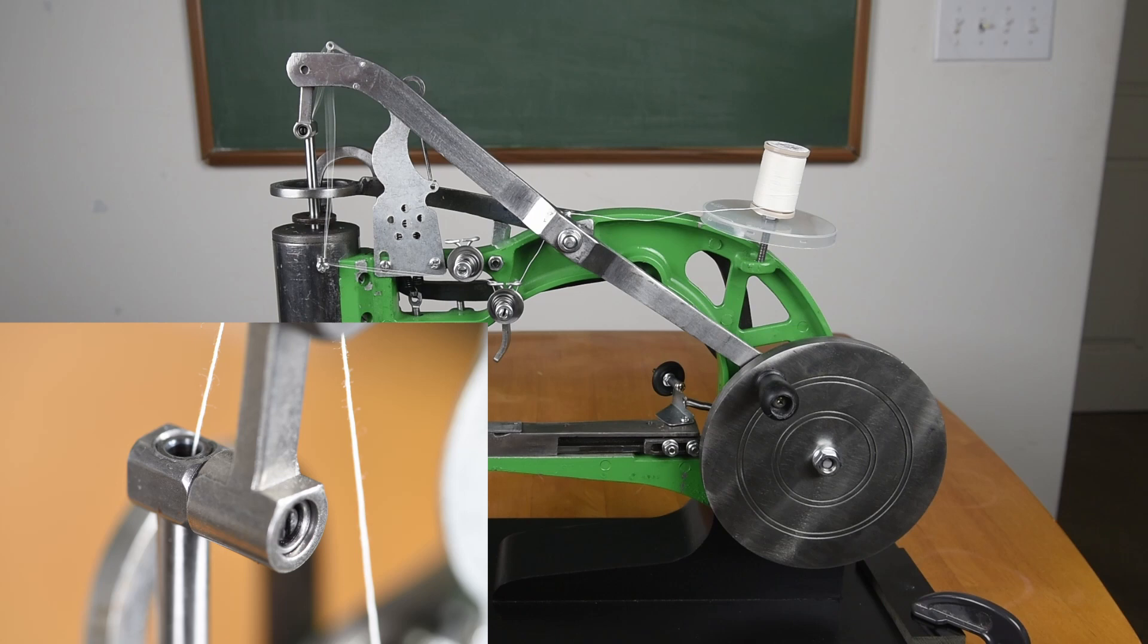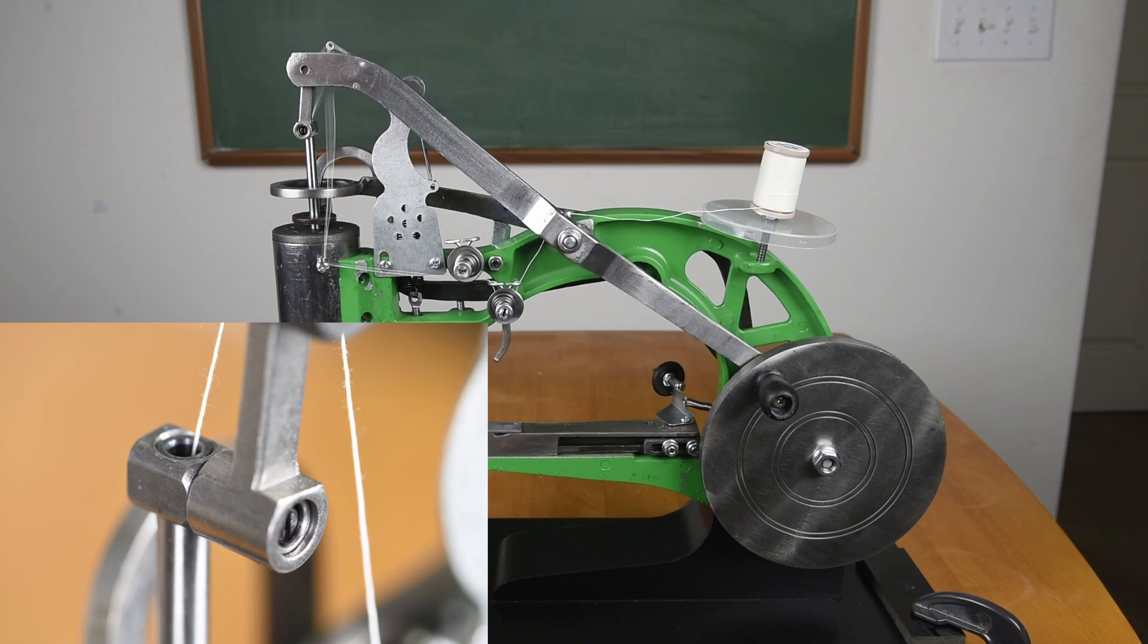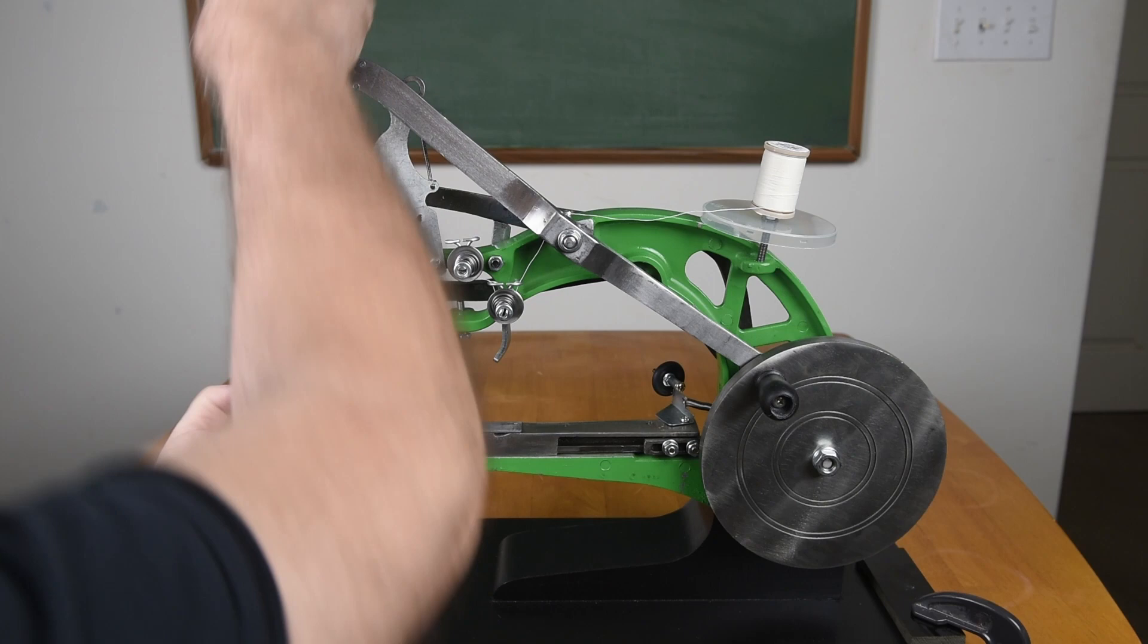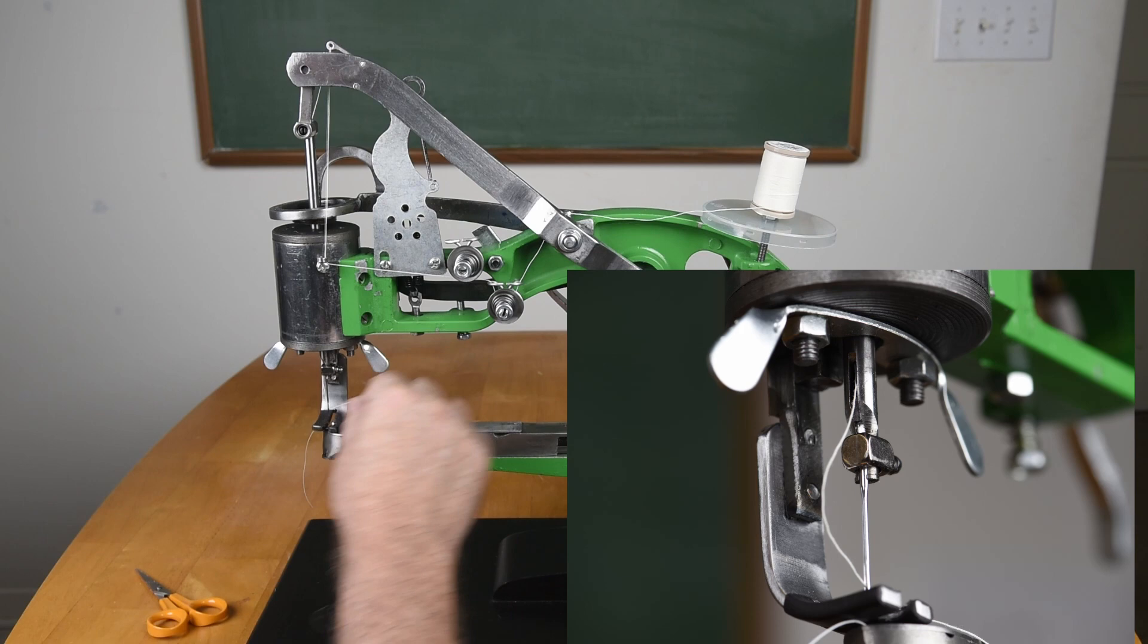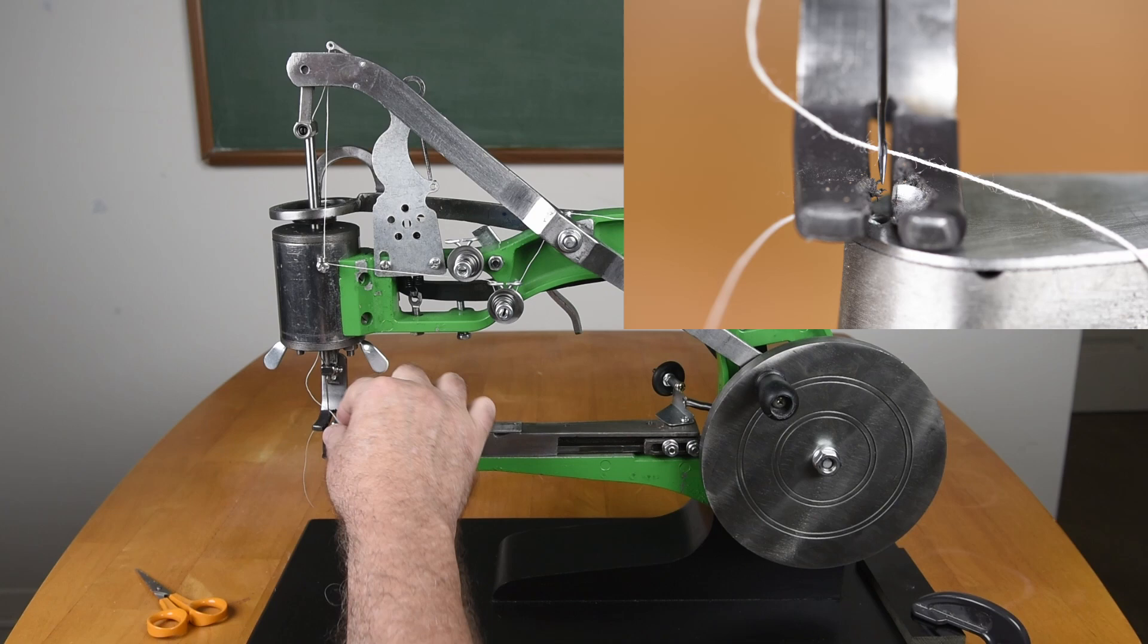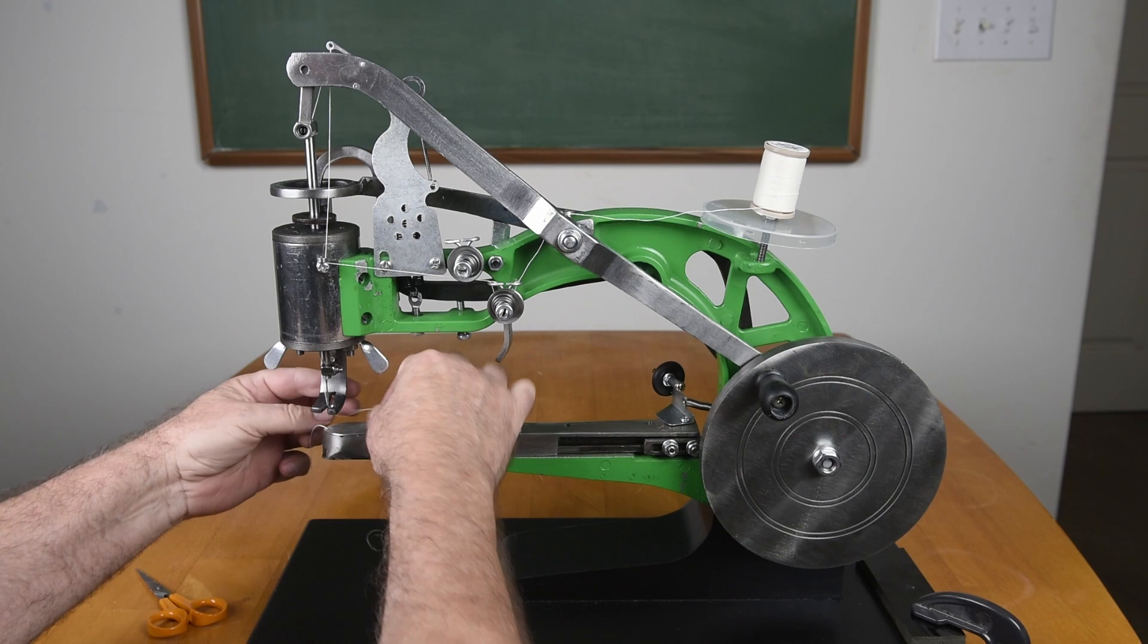Then it comes down through this needle tube here. You have to take and run your wire up through the needle tube at the bottom and grab the thread up here and pull it down through. Then the thread comes down through the needle from the left to the right, and then you pull your walking foot up and pull the thread back and it's ready to go.